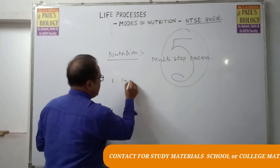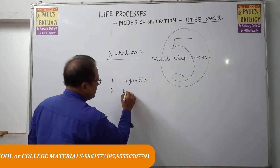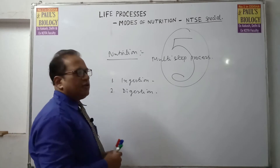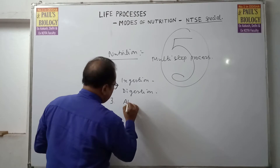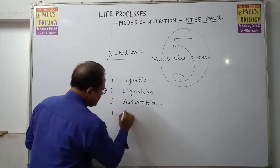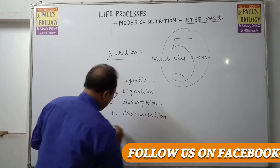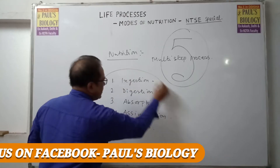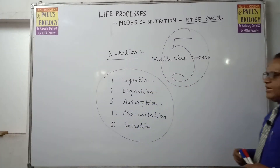The five steps of nutrition are: number one is ingestion — ingestion means taking food; number two is digestion — digestion means the complex food is broken down into simpler form; number three is absorption; number four is assimilation; and number five is excretion or ejection. These are the five steps by which nutrition occurs.